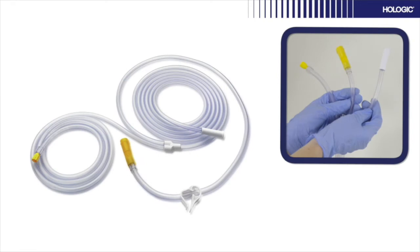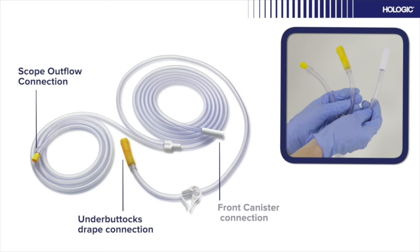The outflow tubing is in the shape of a Y with three openings: yellow luer lock to the outflow channel on the scope, yellow tip on the underbuttock drape, and white tip for the front right canister.